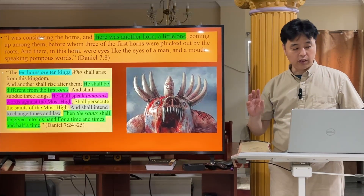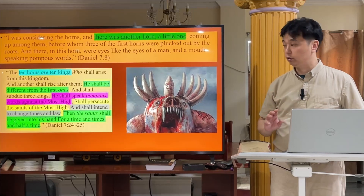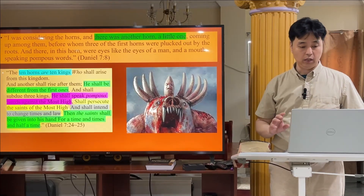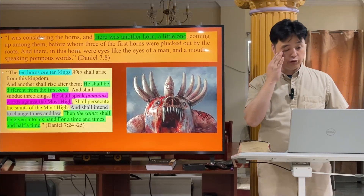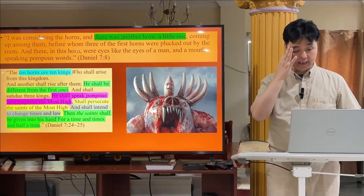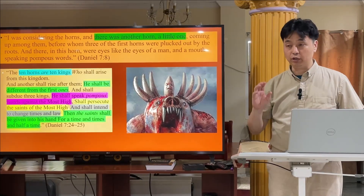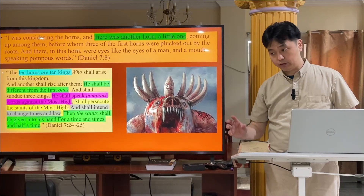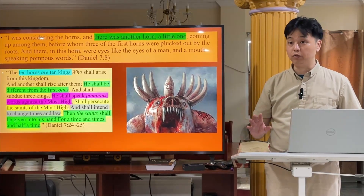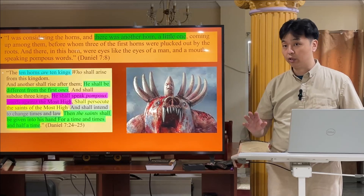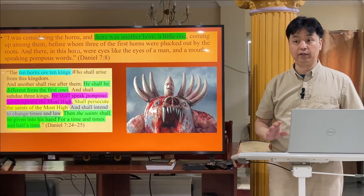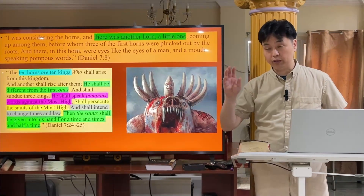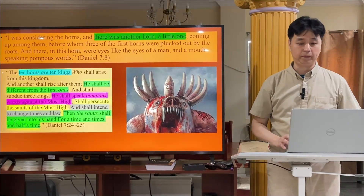We are going to learn about that, but first we are going to learn about the little horn. The first thing: he is different from the other first ones — the others don't have an eye or a mouth, but he has it. The second: he shall speak pompous words against the Most High — in other words, this little horn is against God. Some English versions of the Bible translate 'a time, times, and half a time' as 'a year, two years, and half a year.'